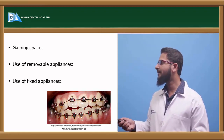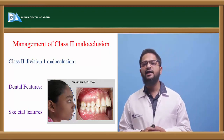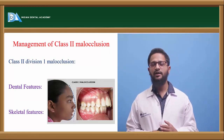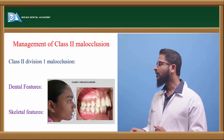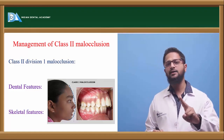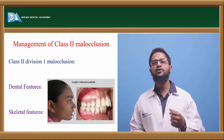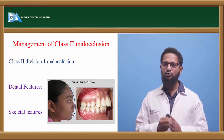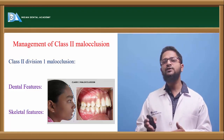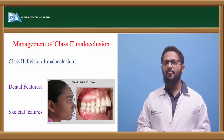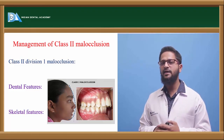Next is management of Class II malocclusion. According to Angle, Class II malocclusion is the condition wherein the distobuccal cusp of the maxillary molar occludes in the buccal groove of the mandibular molar. This Class II malocclusion is divided into two categories: Class II Division I and Class II Division II. Class II Division I is characterized by Class II molar relationship and severe anterior proclination of the maxillary teeth. Class II Division II has Class II molar relationship but the two maxillary central incisors are retroclined and the lateral incisors are proclined.